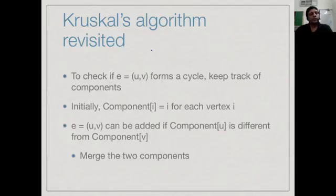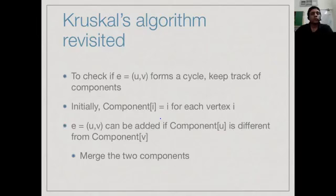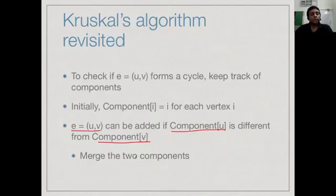How do we keep track of components? We can label components by numbers. Since we have n vertices and initially no edges, everything is disconnected. Initially we have n vertices and n components. The natural approach is to say each vertex i belongs to a component called i. We can add edge uv if the component of u is different from the component of v. After adding it, we must merge the two components — give them the same label.